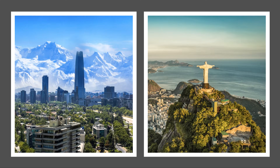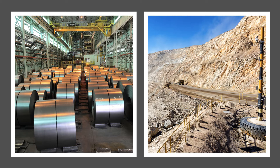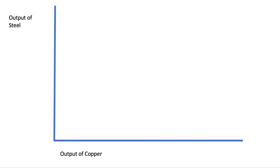Let's consider two countries — Chile and Brazil — and they are both initially producing steel and also copper. This is the standard two-country, two-product model that you'll be hopefully familiar with if you've studied the theory of comparative advantage. This is a production possibility curve; we're looking at the outputs of steel and copper, with output of steel on the y-axis and output of copper on the x-axis. Drawing the PPF for Chile as a straight line assumes that the marginal opportunity cost between steel and copper is constant. Obviously most of the time we draw PPFs as concave to the origin, as non-linear, reflecting diminishing returns, but in this example let's assume the PPF is a straight line — that certainly helps the analysis.